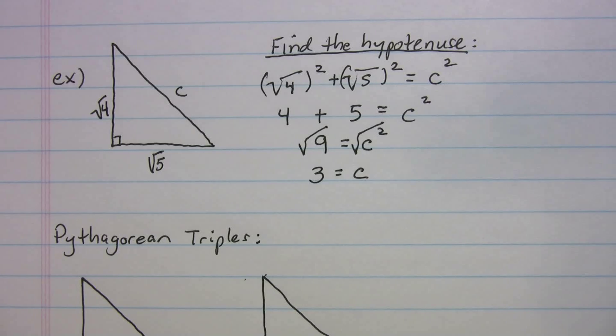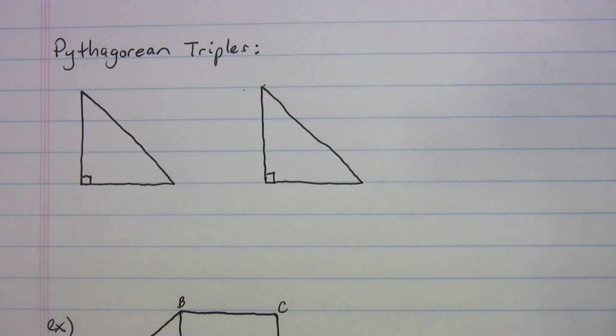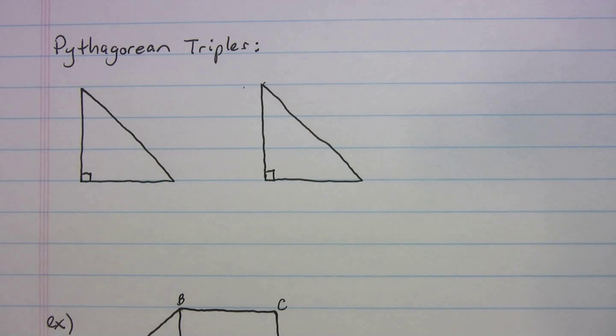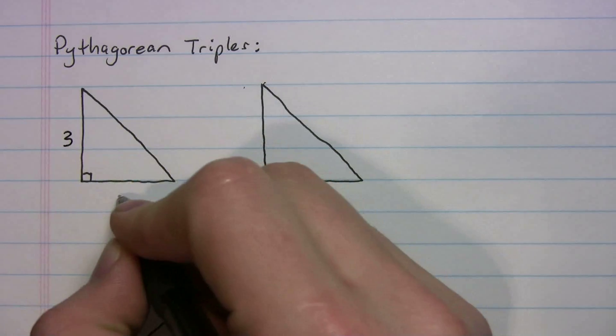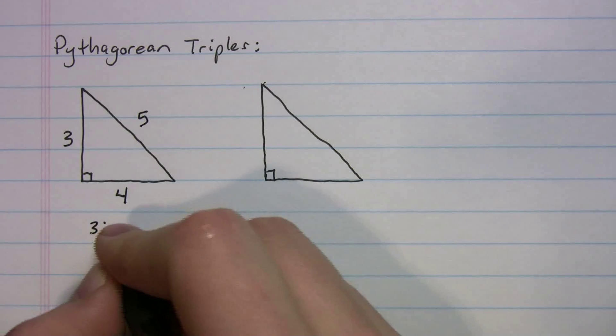All right, when can you avoid using Pythagorean theorem? Every once in a while on the SAT, the Pythagorean triples show up, and you probably know one of them really well. That's the 3-4-5. And all that means when you have legs of three and four, by default, this has to be five. So that's the 3-4-5.